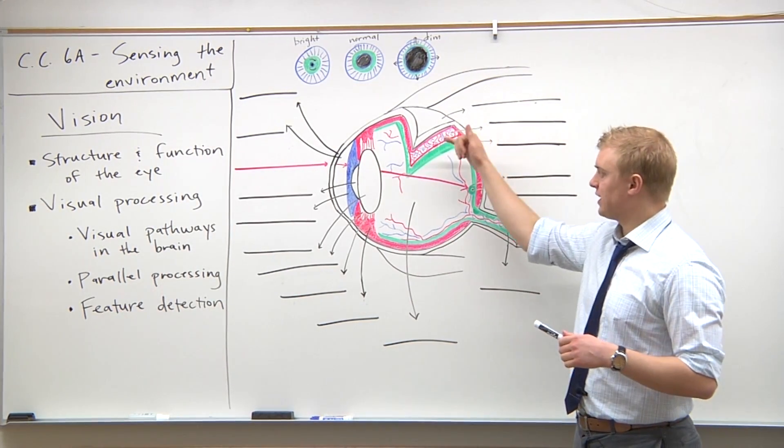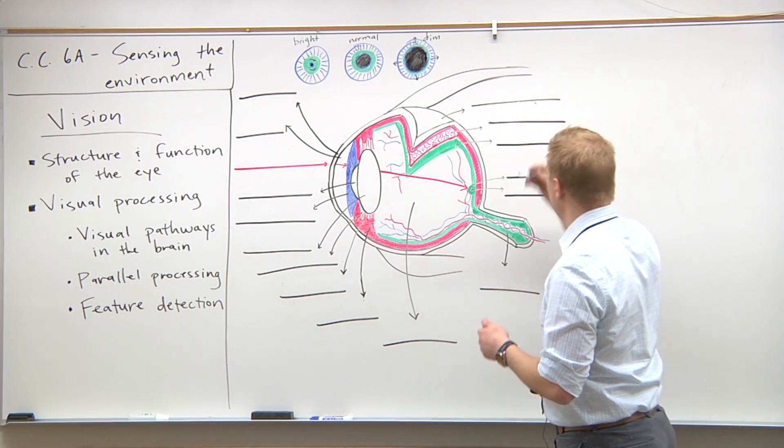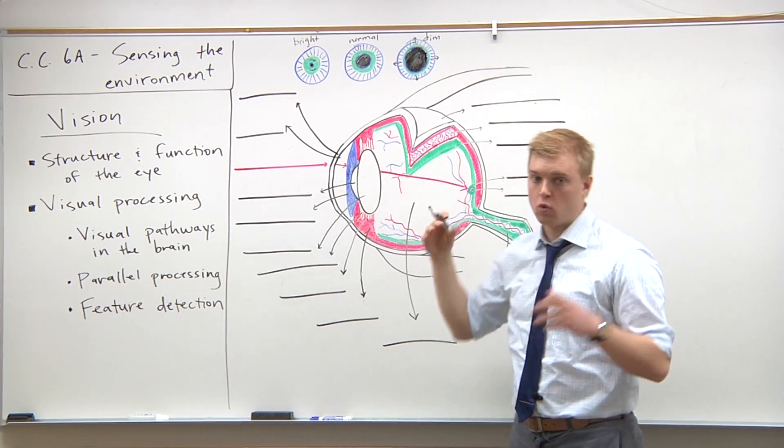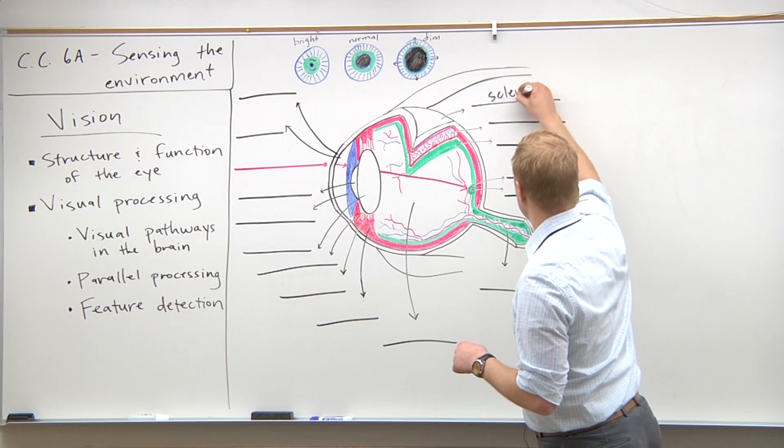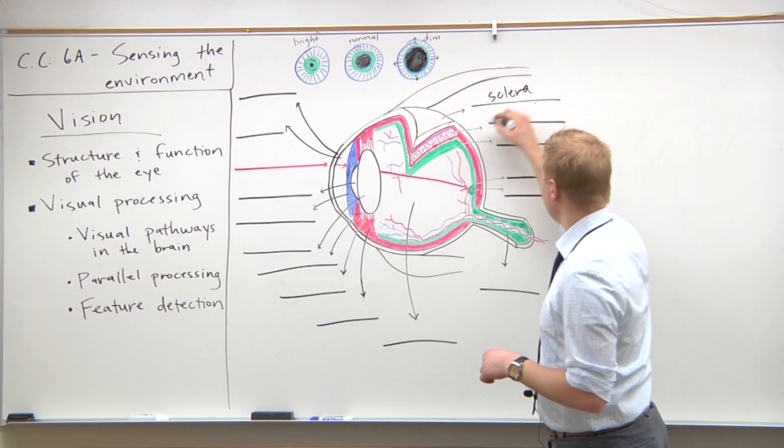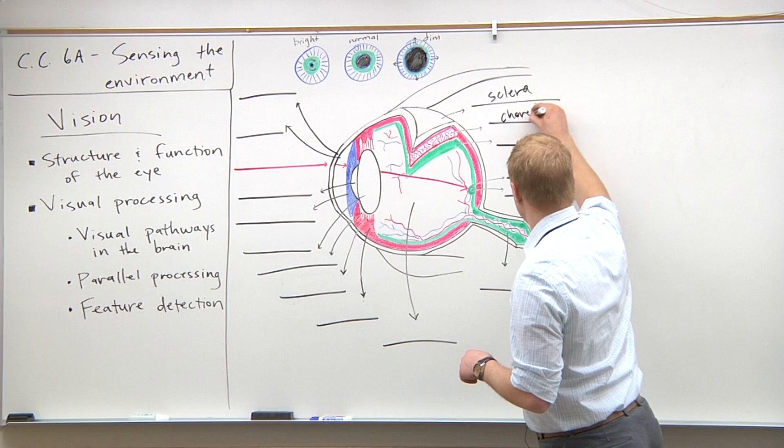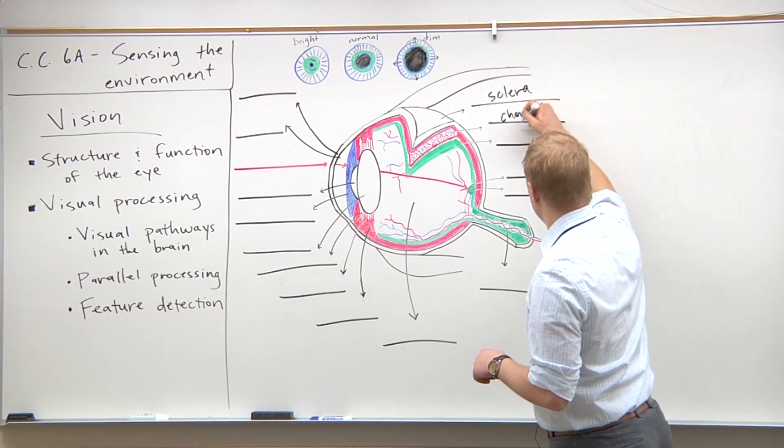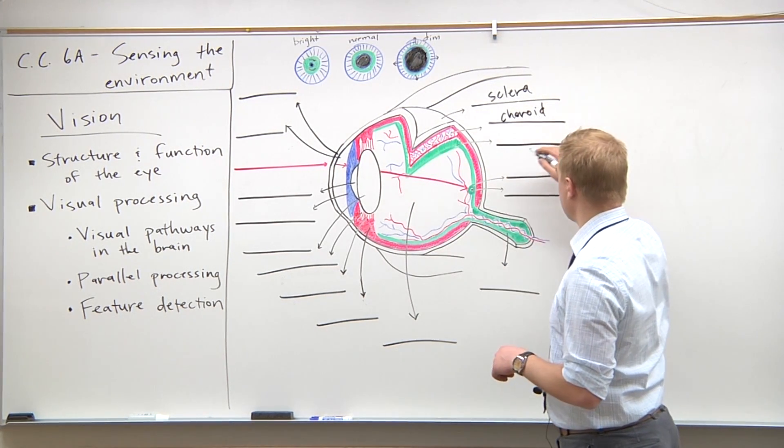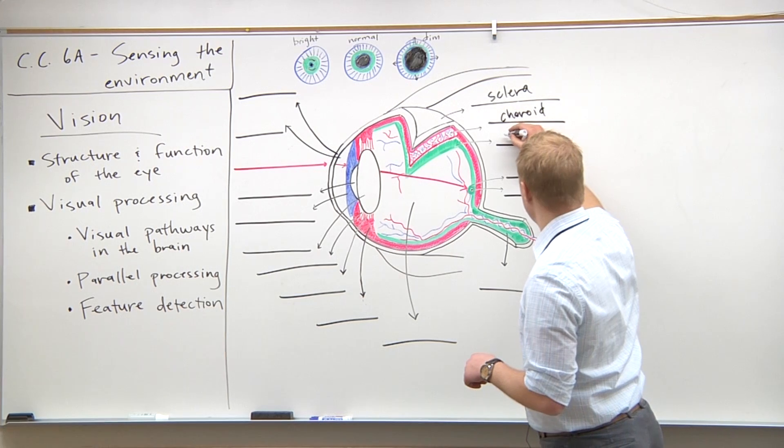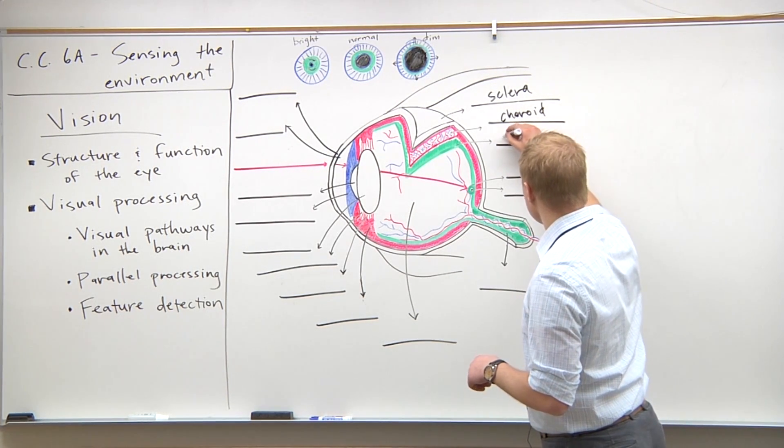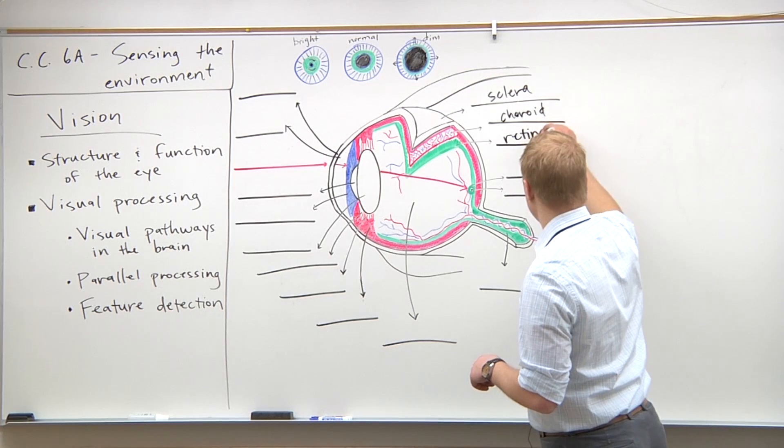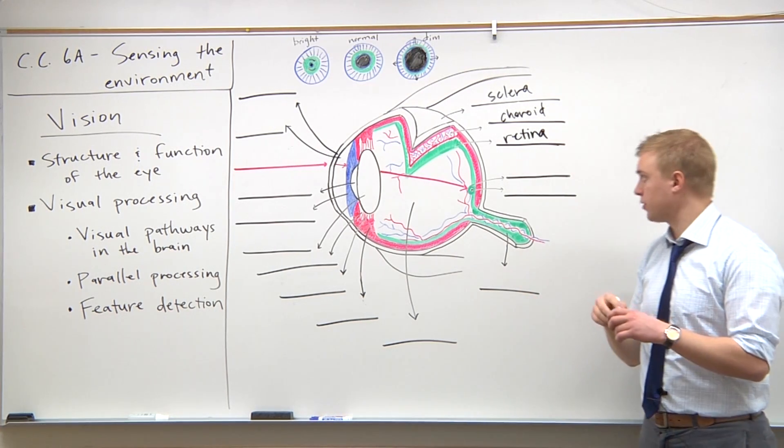First, there are three distinct layers. The outermost layer, also known as the whites of the eye, is the sclera. Underneath that is the choroid, which has blood vessels. Below that we have the retina, which also has blood vessels. We'll talk more about the retina and its importance in just a second.